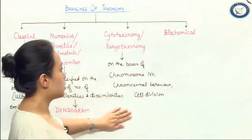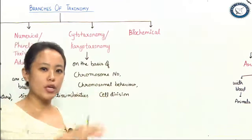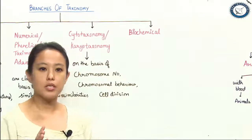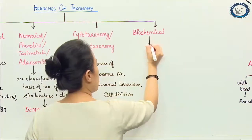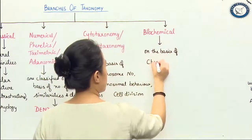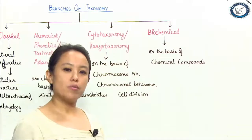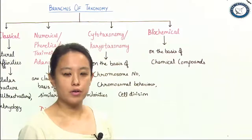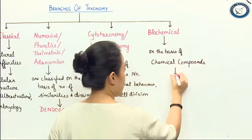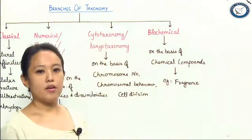Last but not the least, we will be dealing with biochemical taxonomy. As the name suggests, if an organism is classified on the basis of chemical compounds, that is biochemical taxonomy. For example, consider sunflower and rose — on the basis of fragrance, which is a chemical property, organisms can be classified. So fragrance is one of the best examples for biochemical taxonomy.